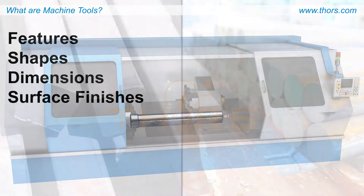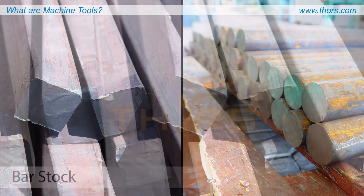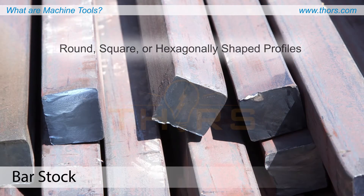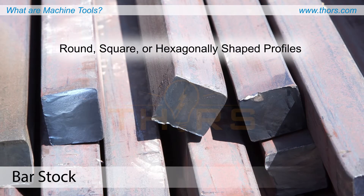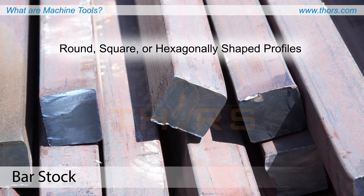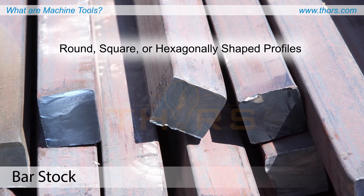A workpiece, which is the part to be machined, may originate from a variety of raw or pre-machined forms. Bar stock can have round, square, or hexagonally shaped profiles, and typically come in different lengths.